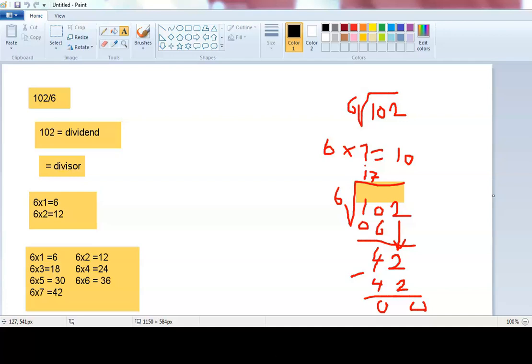For example, if you take 6 into 10, you get 1. Then you multiply 1 by 6, drop it below the 10, subtract, you get a 4.